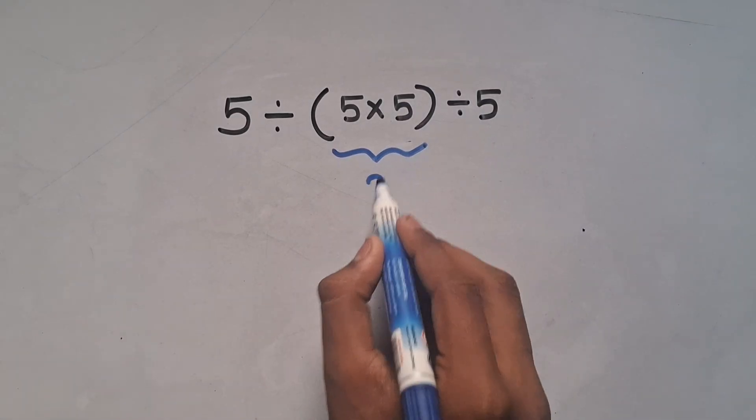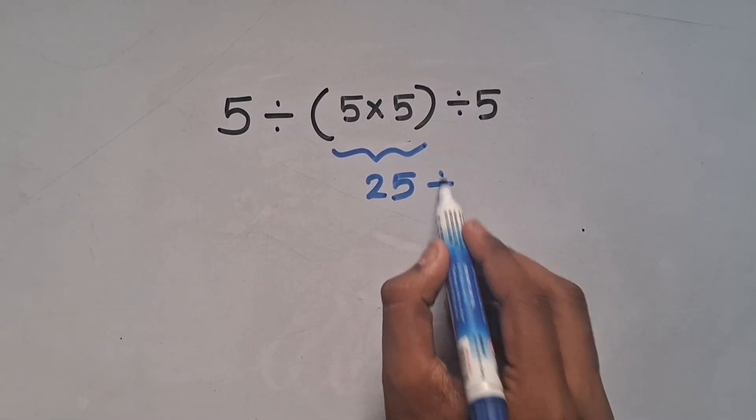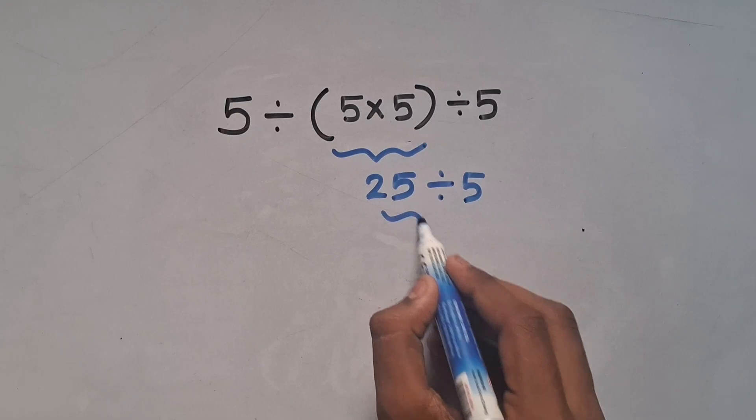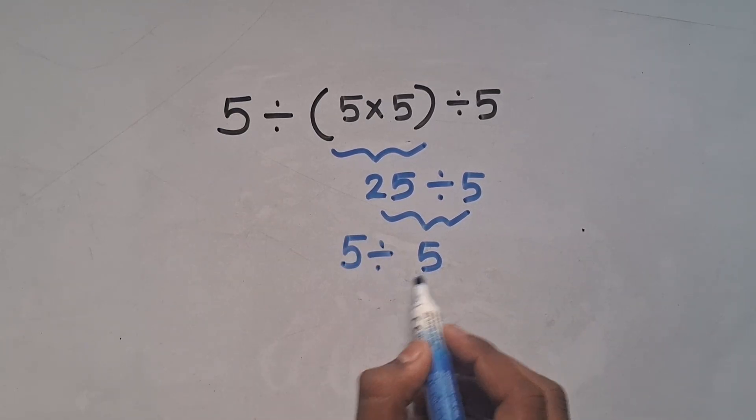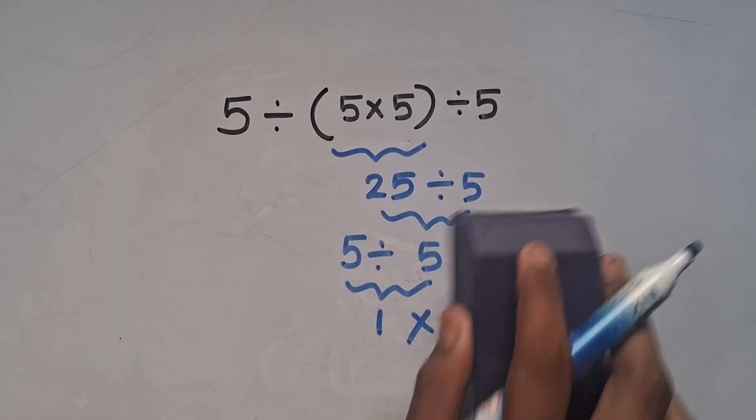5 times 5 equals 25, and 25 divided by 5 is equal to 5. This 5 divided by 5 is equal to 1, but 1 is not the correct answer for the expression.